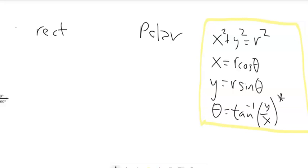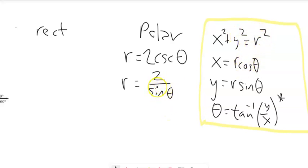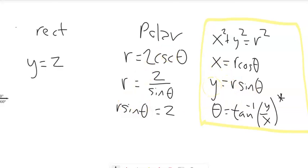Now going from polar to rectangular — we want to eliminate all r's and thetas and get x's and y's. For r = 2·csc(θ): since csc(θ) = 1/sin(θ), this is r = 2/sin(θ). Multiplying both sides by sin(θ): r·sin(θ) = 2. Since r·sin(θ) = y, we get y = 2. That's just a horizontal line.